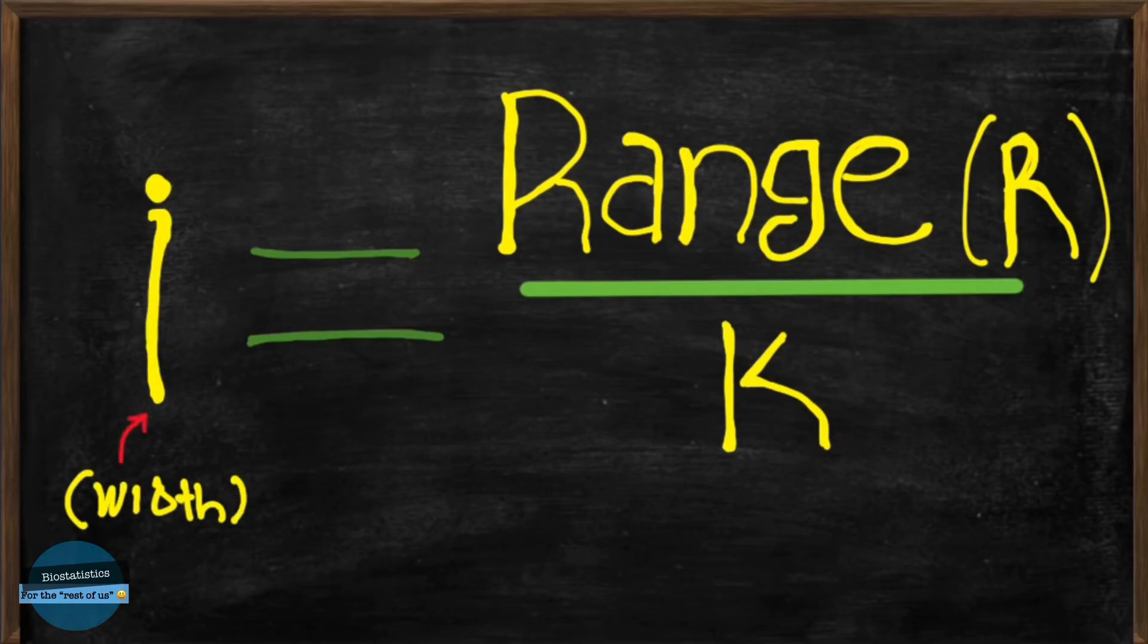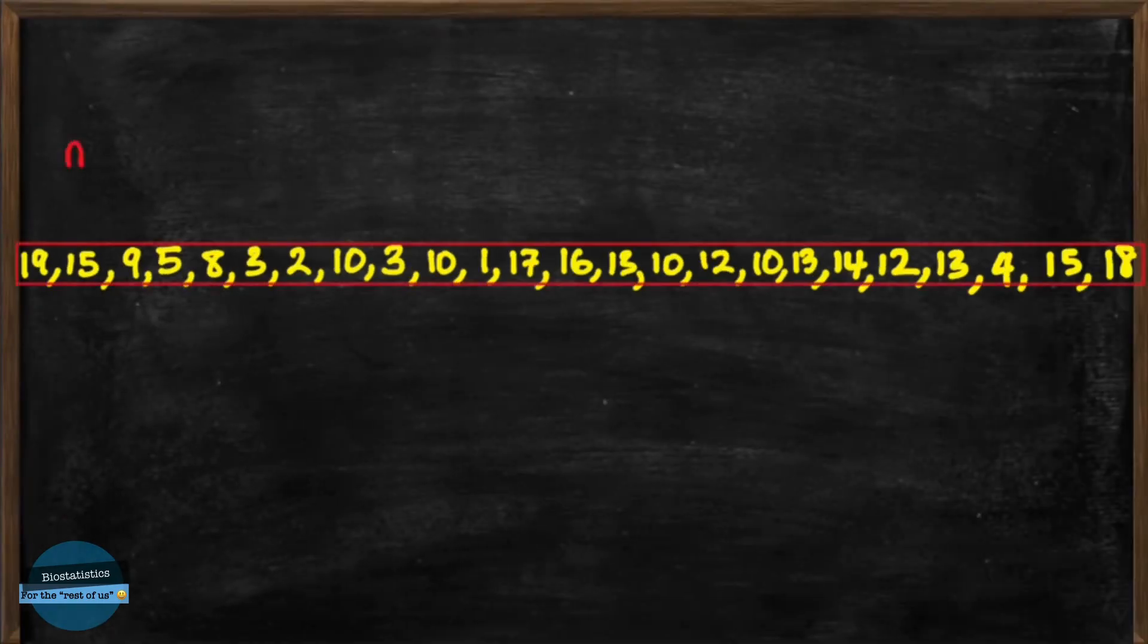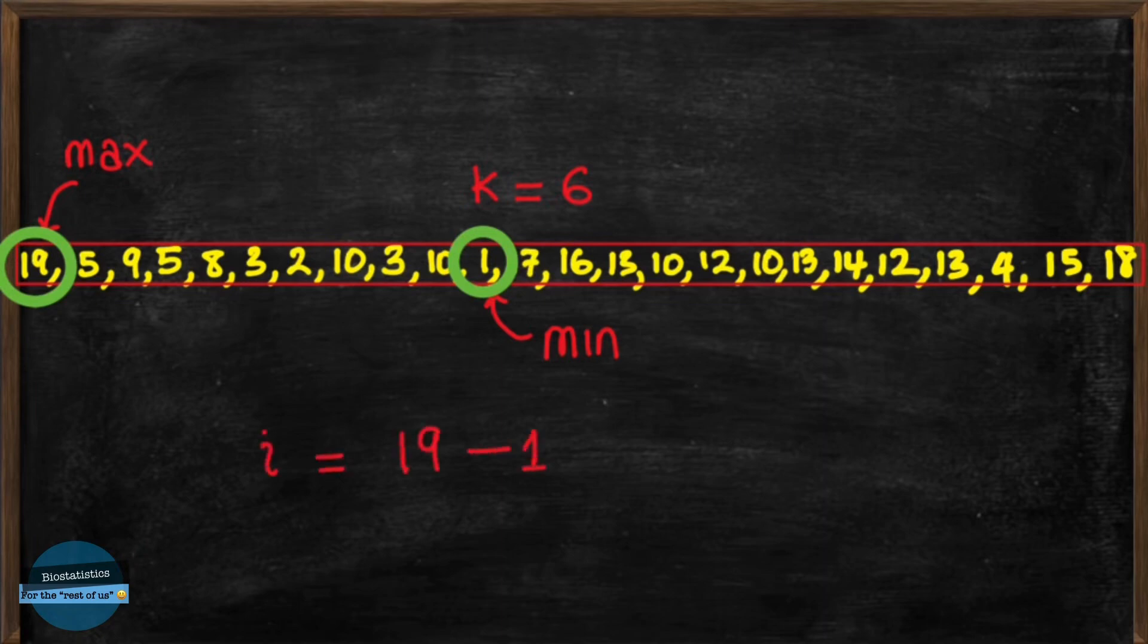For this data, our maximum value is, let's look, it's 19. And our minimum value is 1. And our number of groups k is 6. So i is equal to 19 minus 1 divided by 6. And this will give us a class width of 3.